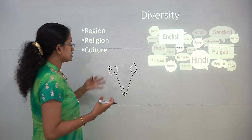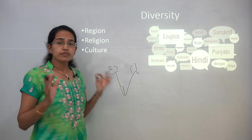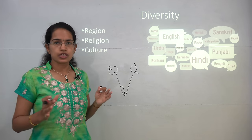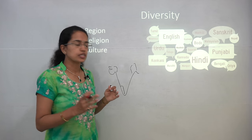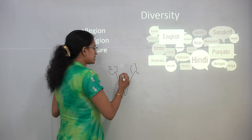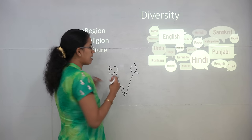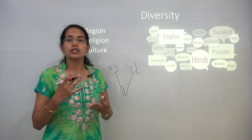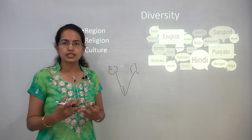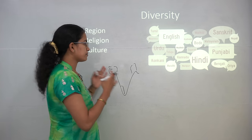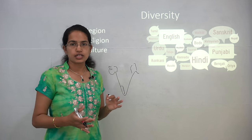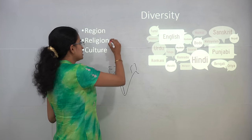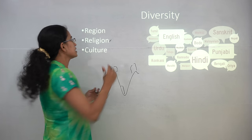Now let's come to religion. India is predominantly a Hindu society or a Hindu nation, but still you have other religions like Jainism, Buddhism, Jews, Parsis, and Islam that are prevalent across the country. So you have variations in, or diversity in, religion.